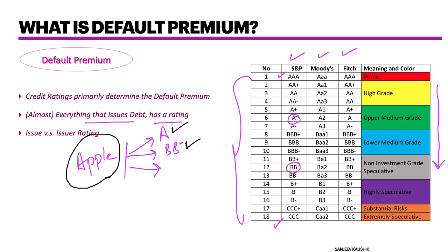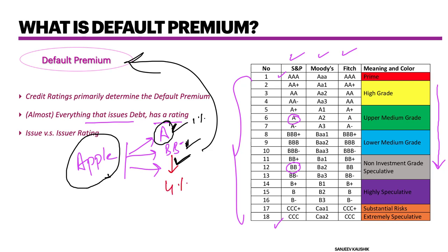What it means is: even though it's the same company issuing the bond, if Apple were to default and I'm holding an A bond, which is senior to a BB negative bond — A would have first claim on the assets of Apple to recover its money. Once A has recovered all the money, only then would BB negative get a chance to recover anything if anything is left. Why would someone invest in BB negative then? Because a BB negative bond will have to pay a higher default premium — say 4% versus 1% for the A bond. There's a trade-off between subordinated debt with higher returns and senior debt with lower interest rates.